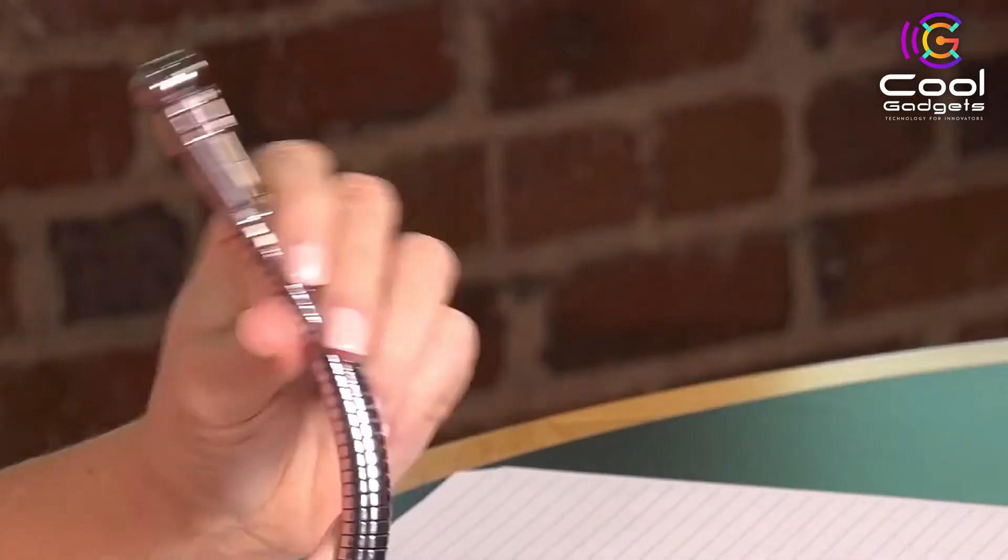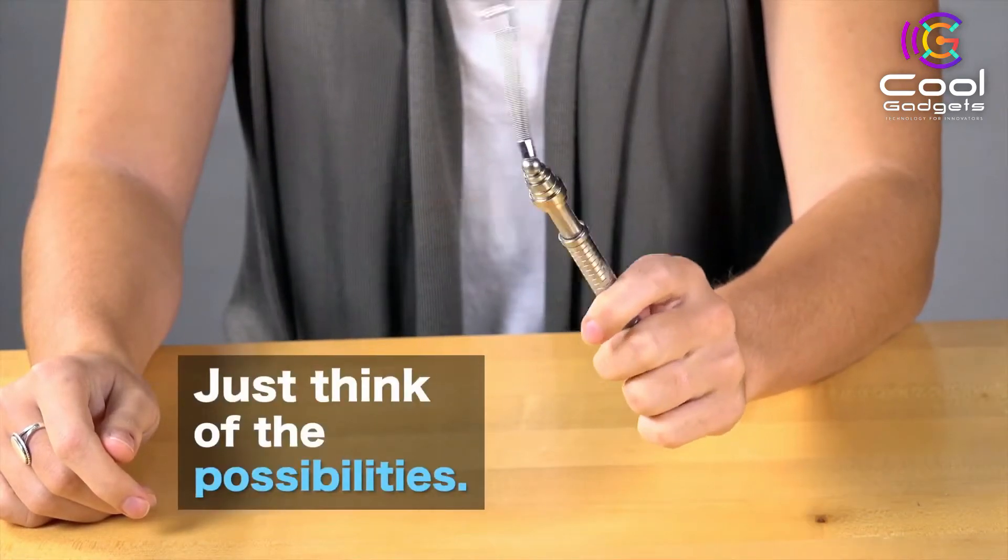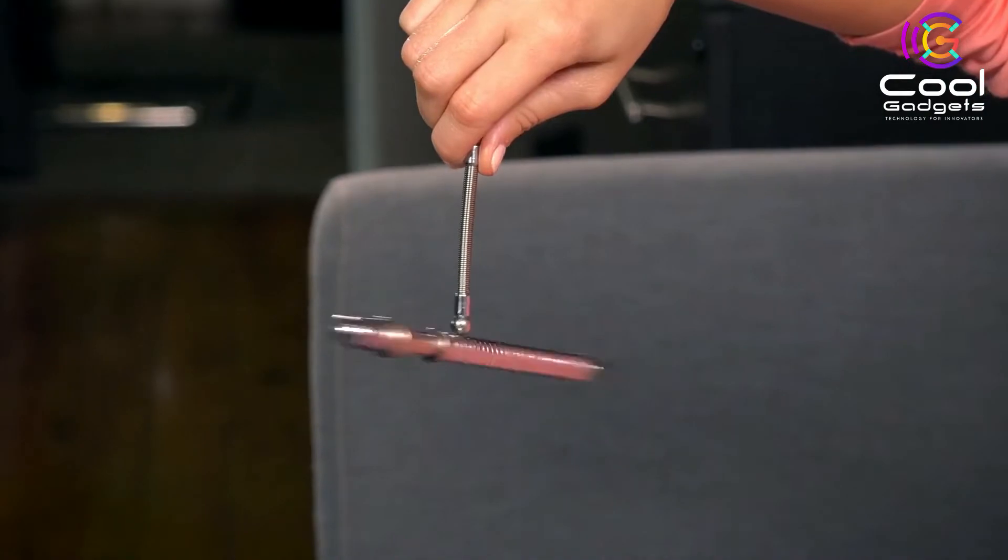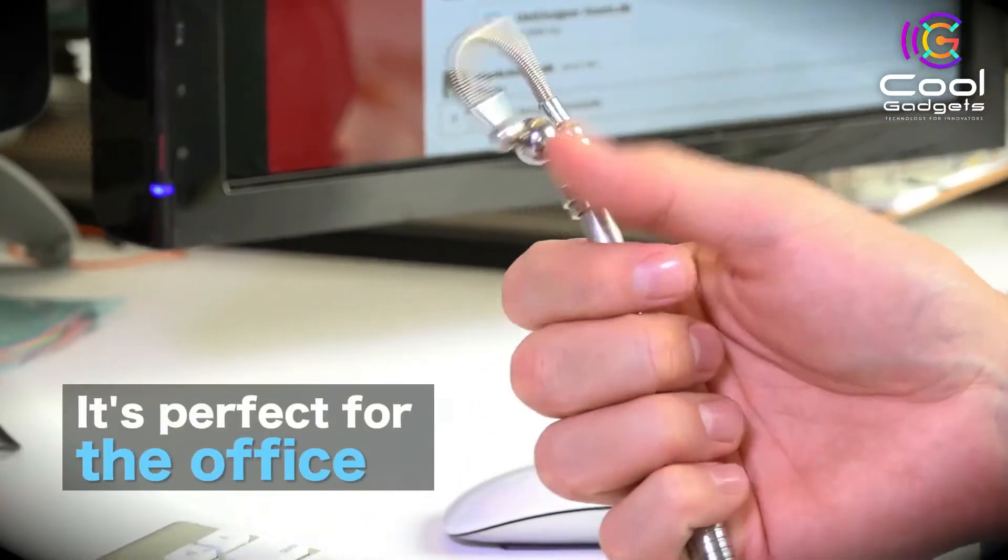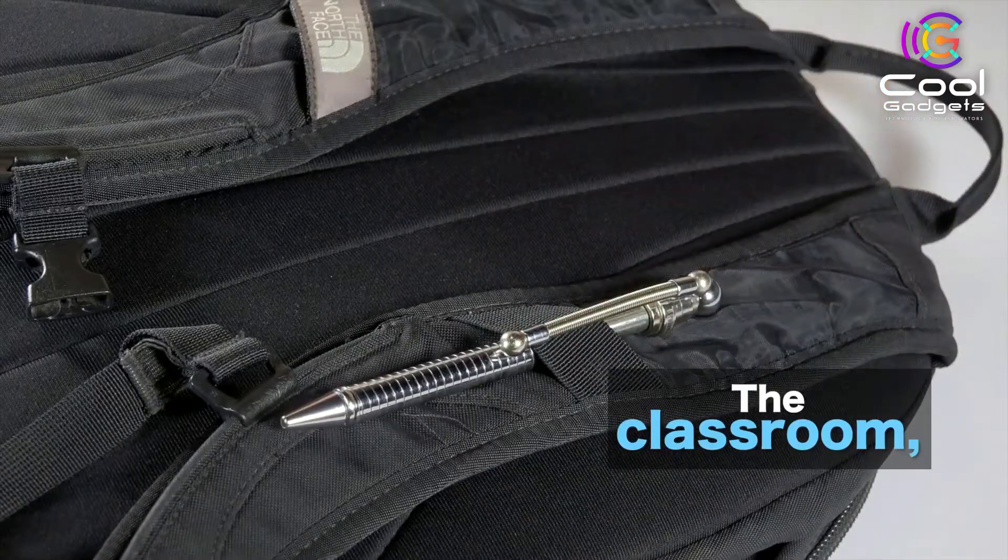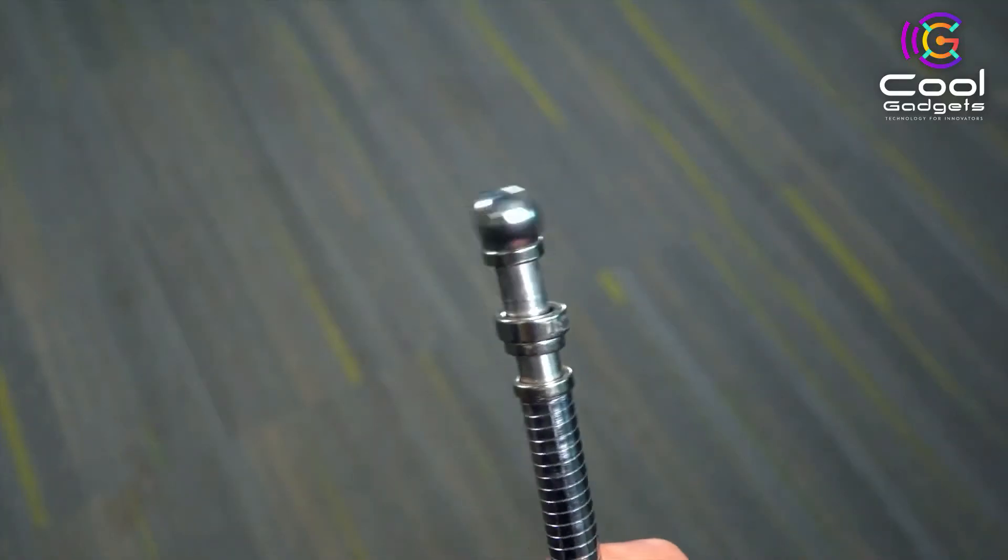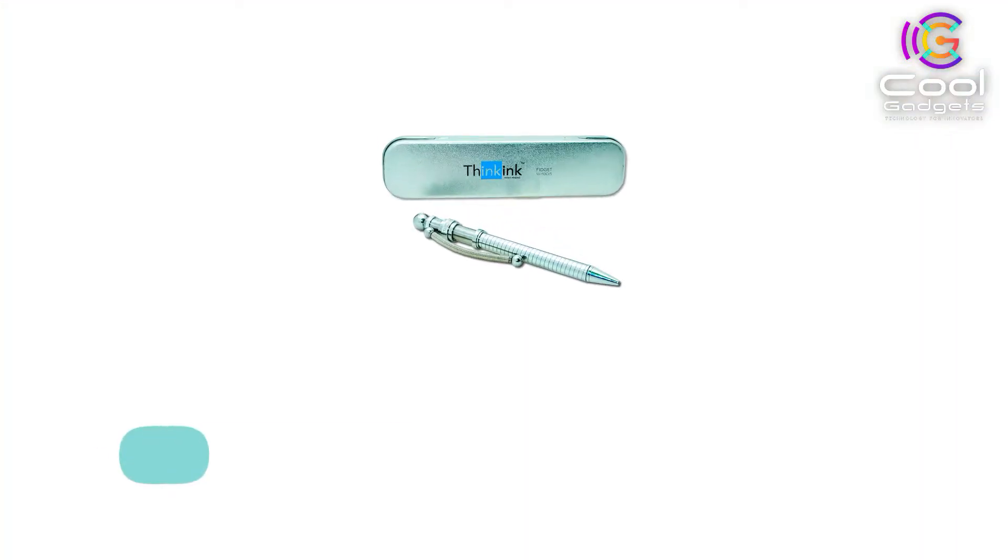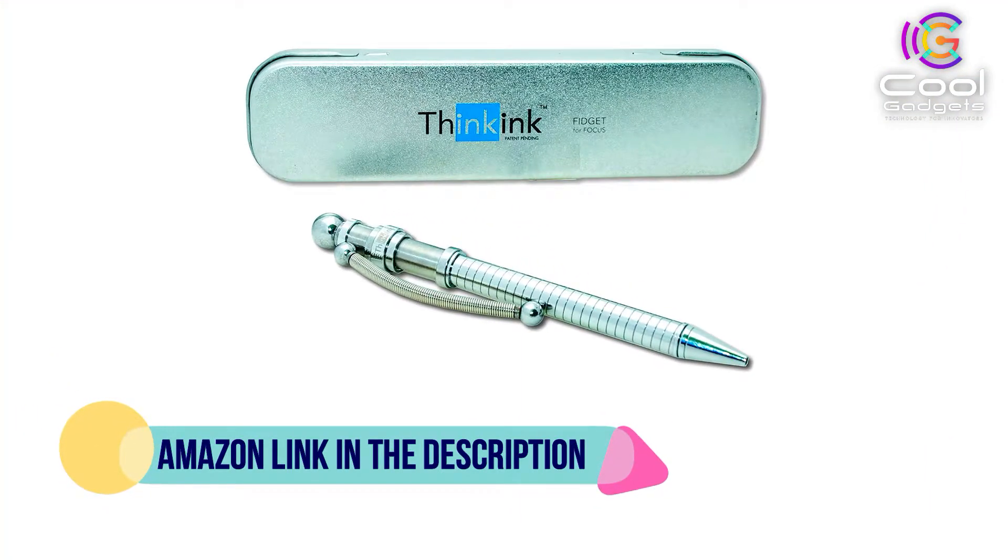For the constant fidgeters in life, Think Ink has created a fun device that allows you to fidget discreetly, whenever, wherever. It features a flexible steel body, a floating magnetic spinner, a removable and flexible magnetic clip, and rotating steel. Enjoy them yourself or give them to your favorite fidgeter. If you like this product, please check out the Amazon link in the description below.